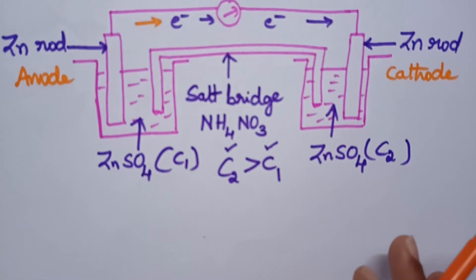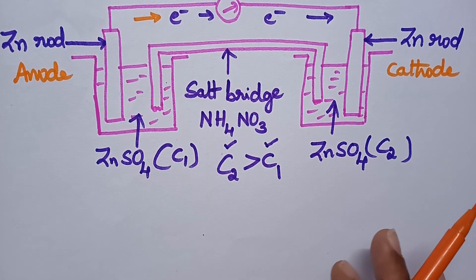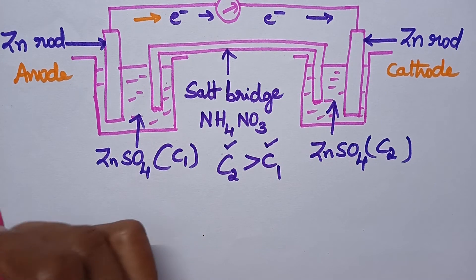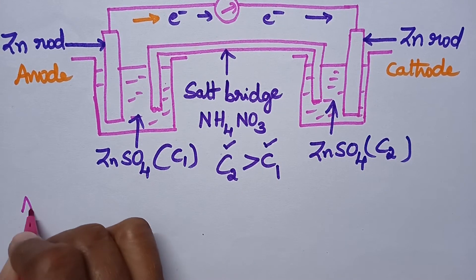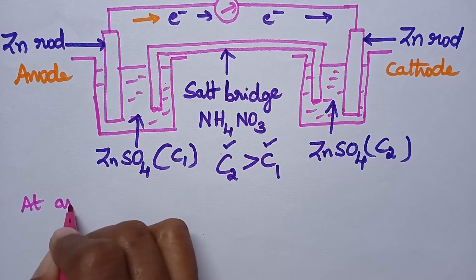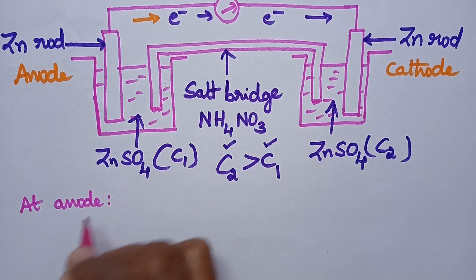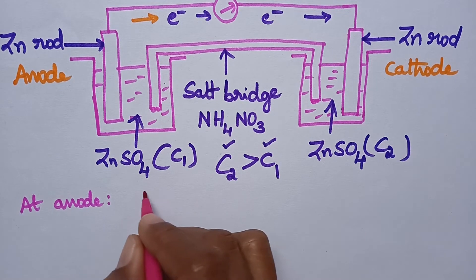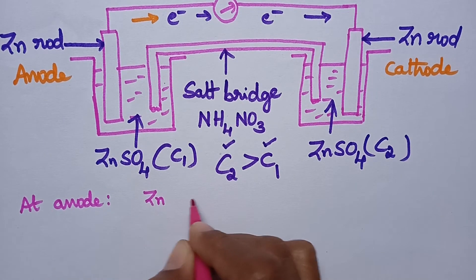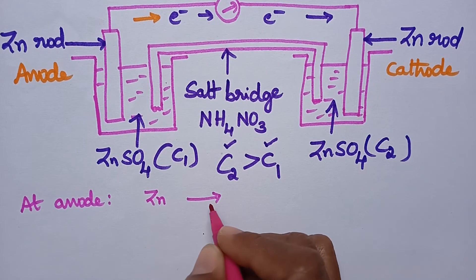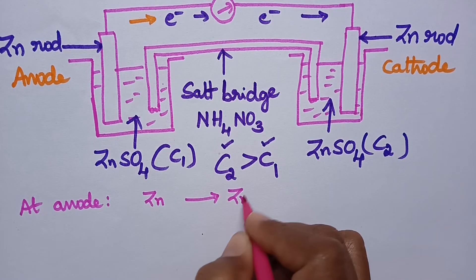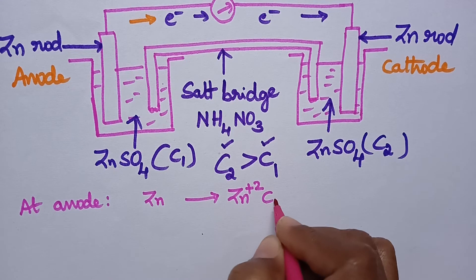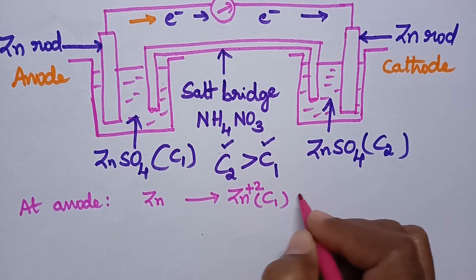Let us consider what reactions are taking place at the anode and at the cathode. Coming to the reactions at the anode — always at the anode, oxidation takes place. Initially zinc undergoes oxidation into Zn²⁺ ions, and here the concentration of the solution is C1.